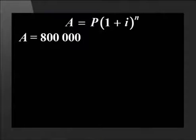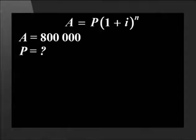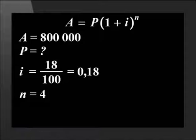A is 800,000. We don't know the value of P. i is equal to 18 divided by 100 which is 0.18 and n is 4. Take a moment to see if you can do the rest by yourself.